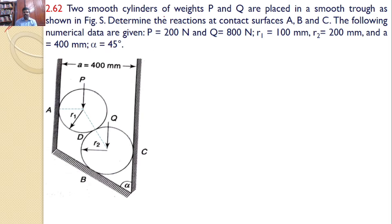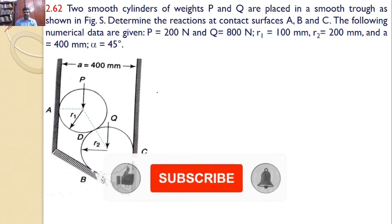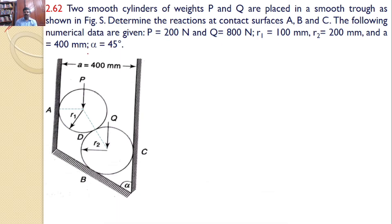Two smooth cylinders of weights P and Q are placed in a smooth trough as shown in figure S. Determine the reactions at contact surfaces A, B, and C. The numerical data is given: P value, Q value, R1, R2, and A value, alpha value, all the values are given.